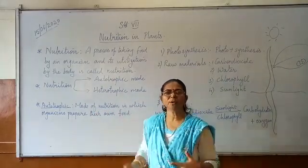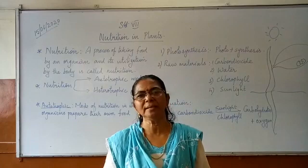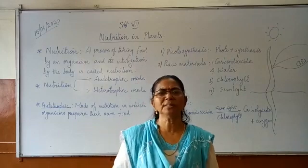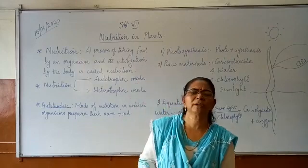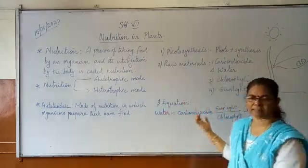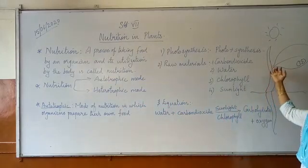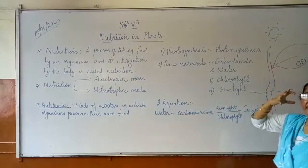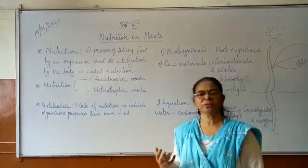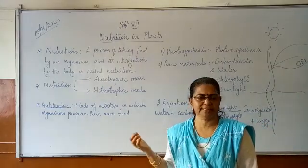This autotrophic mode of nutrition takes place only in plants. How does this autotrophic mode of nutrition take place in plants? The method through which plants prepare food is called photosynthesis.